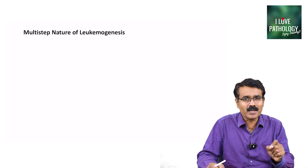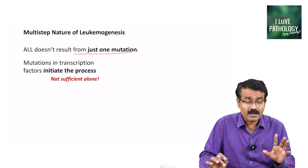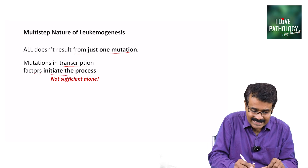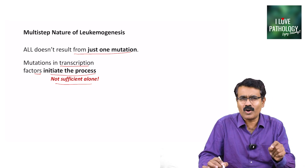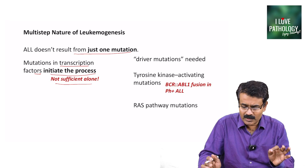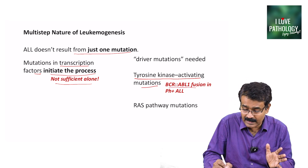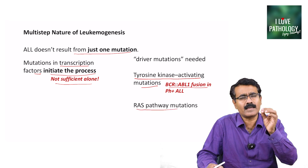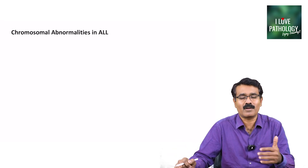Let us see the multi-step nature of leukemogenesis. ALL does not result from just one mutation. Mutation in the transcription factor initiates the process of leukemia but is not sufficient alone — just one mutation will not result in leukemia. You also need driver mutations, for example tyrosine kinase activating mutations. The most common example is BCR-ABL fusion in Philadelphia chromosome-positive ALL. It could also be RAS pathway mutations. These driver mutations help in progression of the leukemia — that is what we call leukemogenesis.